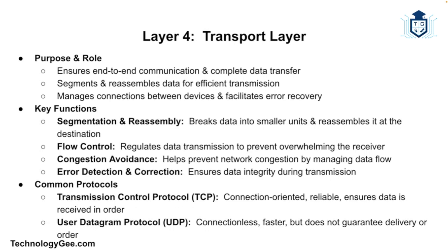Next, let's talk about Layer 4, known as the Transport layer. The Transport layer provides end-to-end communication control and ensures complete data transfer. It segments data into smaller units, manages connections, and facilitates error recovery. Key functions include segmentation and reassembly of data, flow control and congestion avoidance, and error detection and correction. Common protocols include the Transmission Control Protocol (TCP) and the User Datagram Protocol (UDP).